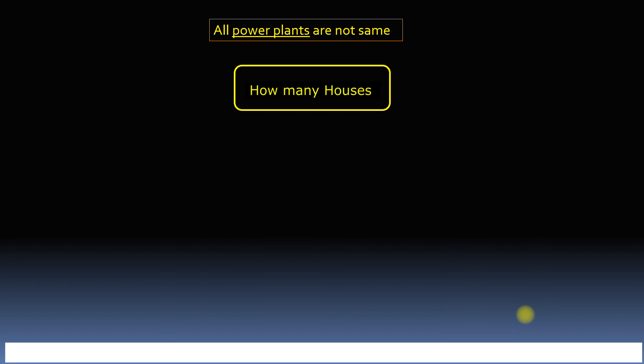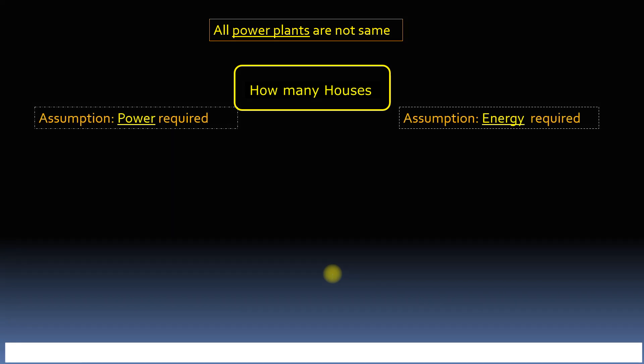To find out how many houses can be powered by one megawatt power plant, we need to make two assumptions. First assumption is how much electrical energy is required by each house. Secondly, we must assume the power required by each house. Based on these two assumptions, we can find two results.